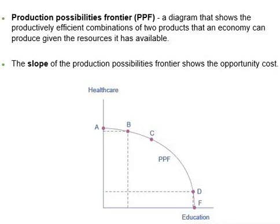Just as individuals cannot have everything they want and must make choices, a country or society cannot have everything it wants either. Because a society has limited resources such as labor, land, capital, and raw materials, there is a limit to the quantities of goods and services it can produce. The constraint a society faces is called the production possibilities frontier, or the PPF.